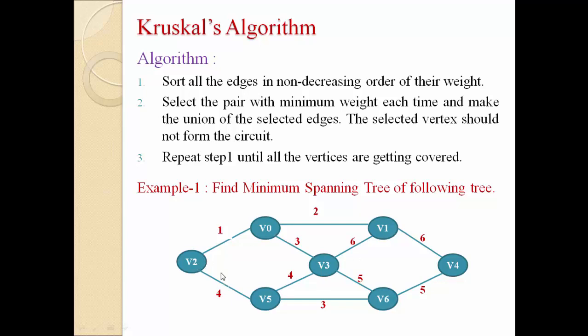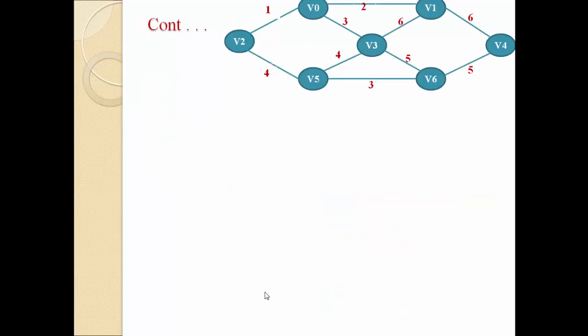Now, in Kruskal's algorithm we can choose any other edge, whether it is connected with V0 and V2 or not — unlike Prim's algorithm, where we cannot choose an edge not connected to the current graph nodes. In Kruskal's algorithm we select any edge with minimum weight, but every time we must check there is no cycle. The edge V0 to V2 has cost 1, which is the minimum cost among all edges, so we select it.